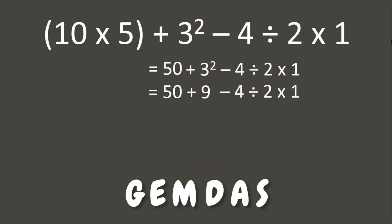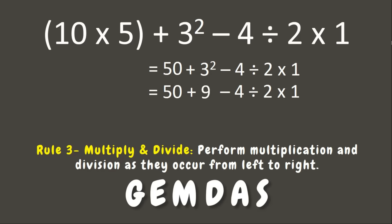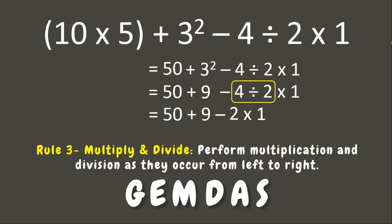The next step is Multiplication and Division. We need to perform multiplication and division as they occur from left to right. Since division comes first before multiplication in the given expression, we divide first. 4 divided by 2 is 2. Next is multiplication — let us multiply 2 and 1. That is 2. Very good.